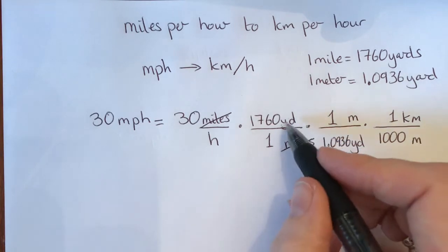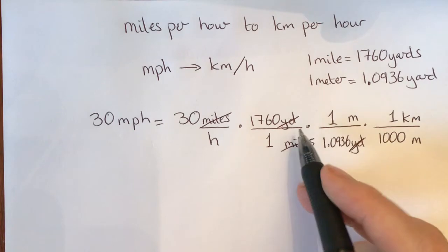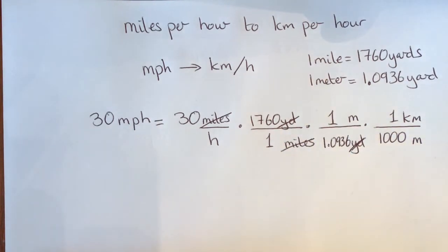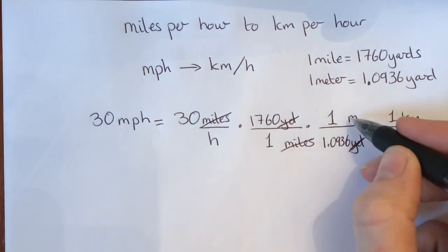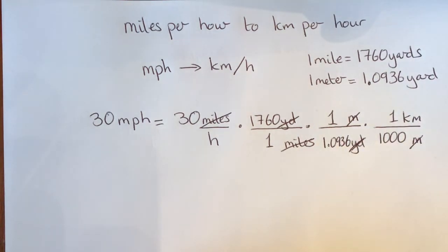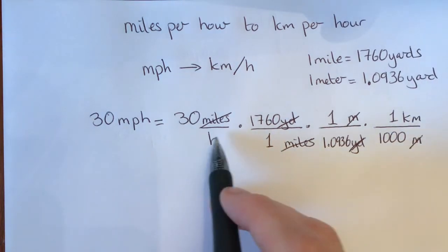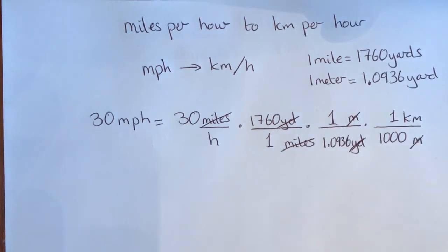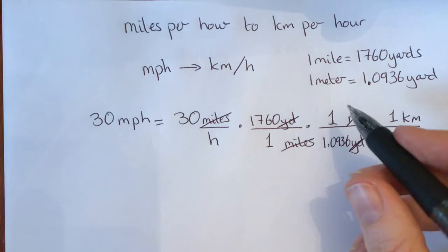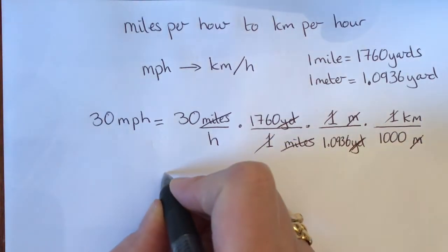Now let's look at the units. The yards cancel — yards divided by yards gives us 1. The meters cancel — meters divided by meters gives us 1. The units we've got left are kilometers per hour, which is exactly what we wanted. We're multiplying and dividing by 1 in those places, which won't change the answer, so we can remove those.